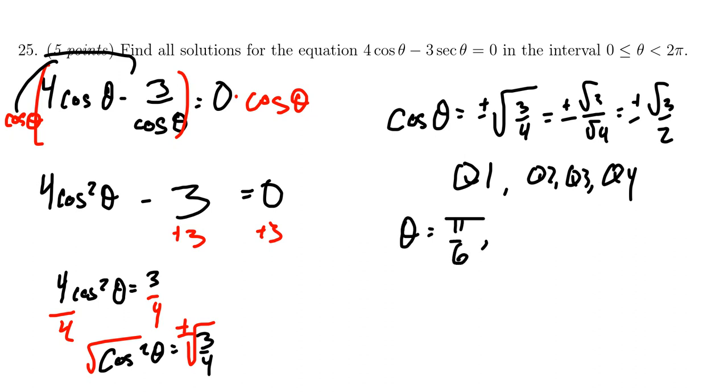In the second quadrant, this would occur at 5 pi sixth. In the third quadrant, this happens at 7 pi sixth. And in the fourth quadrant, you end up with 11 pi sixth.